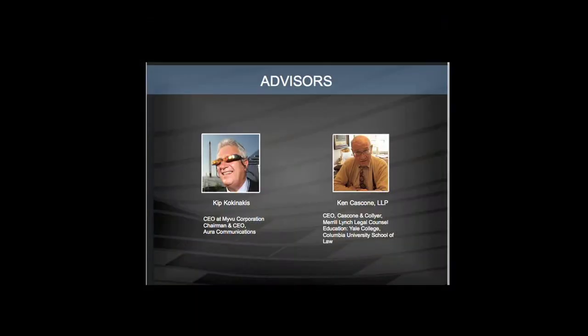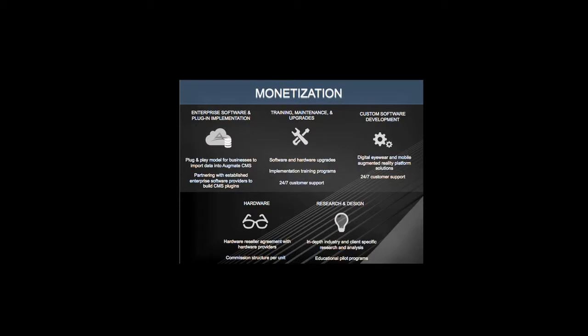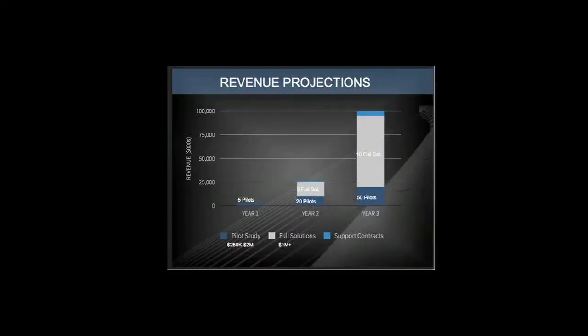Our advisor on the left is Kip Kokonakis — he was the CEO of MyView, the technology that's in Google Glass today. He's one of our advisors. How we make money: system integration, licensing our platform based on the number of enterprise users, and 15% off the hardware. I think it's pretty conservative as far as our revenue plan. We think we get up to $100 million by the end of year three.